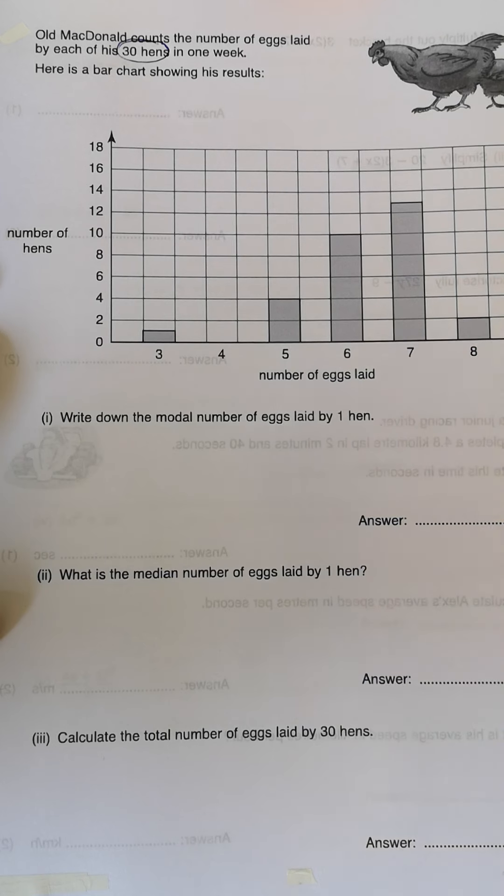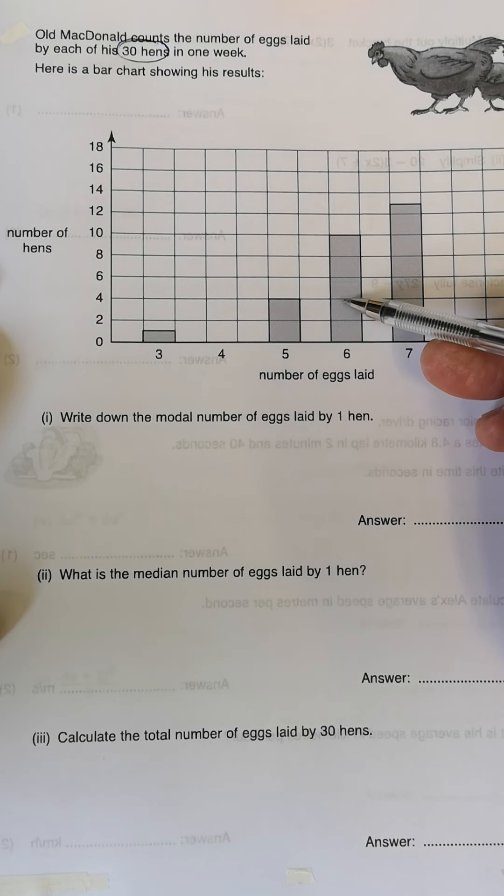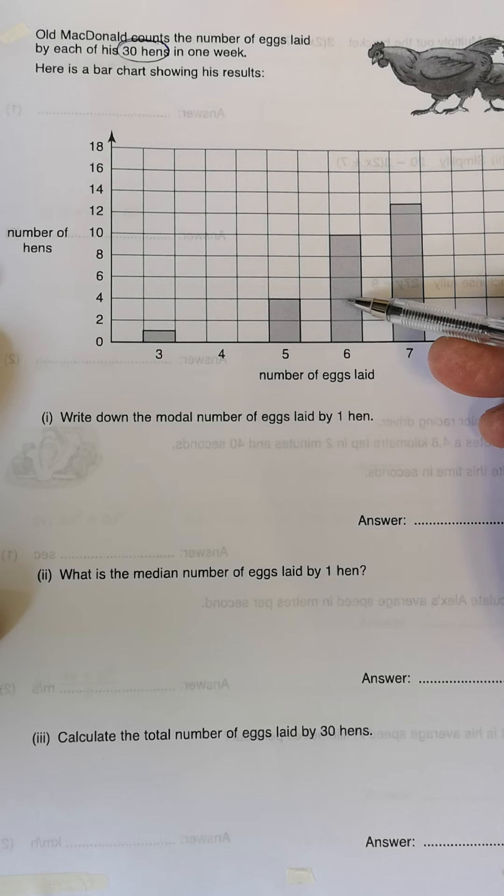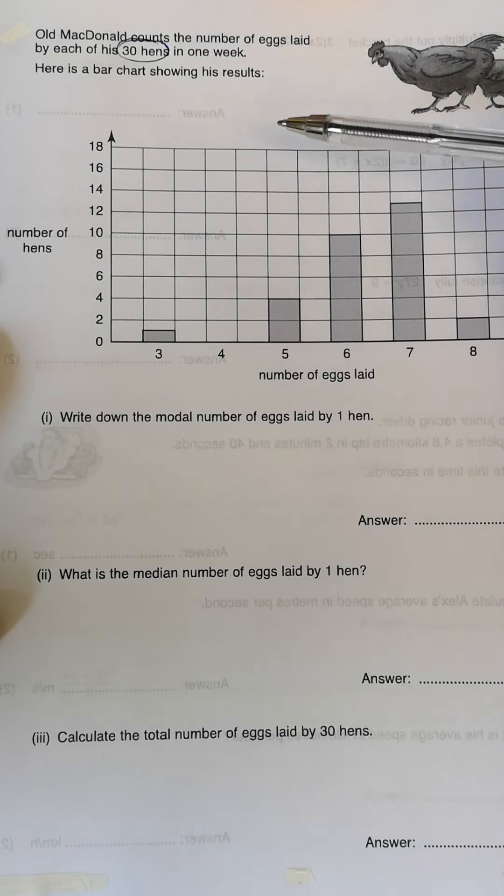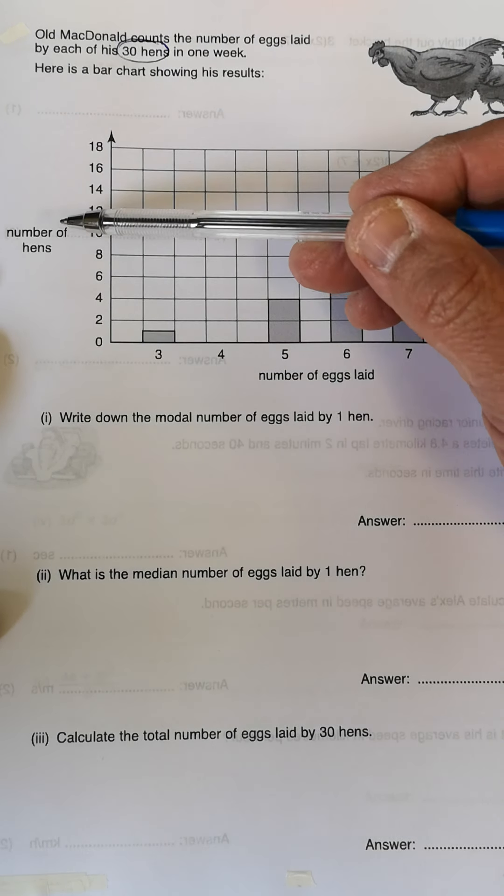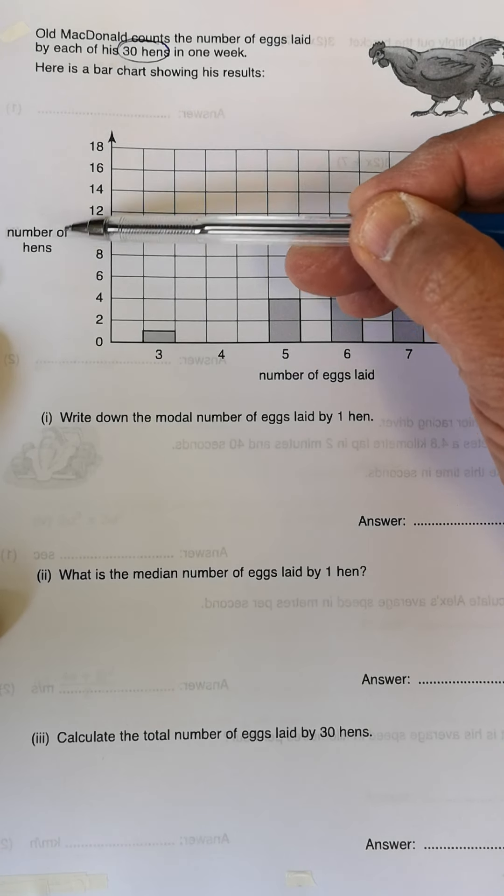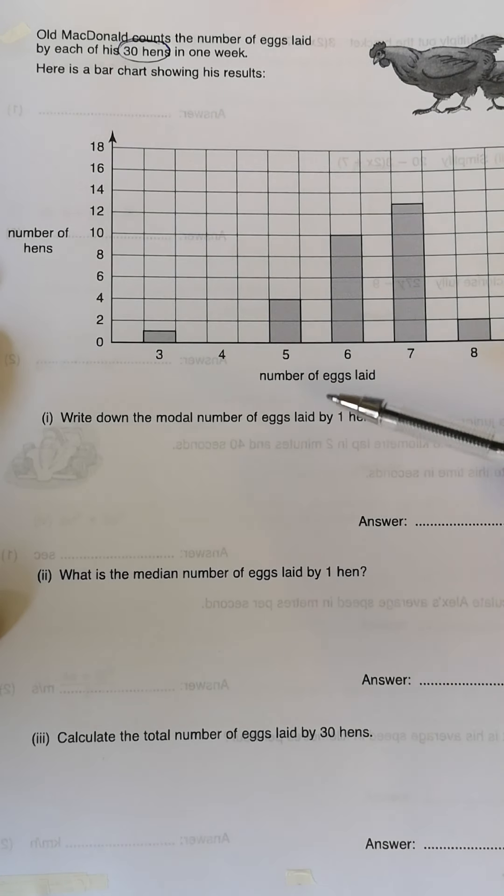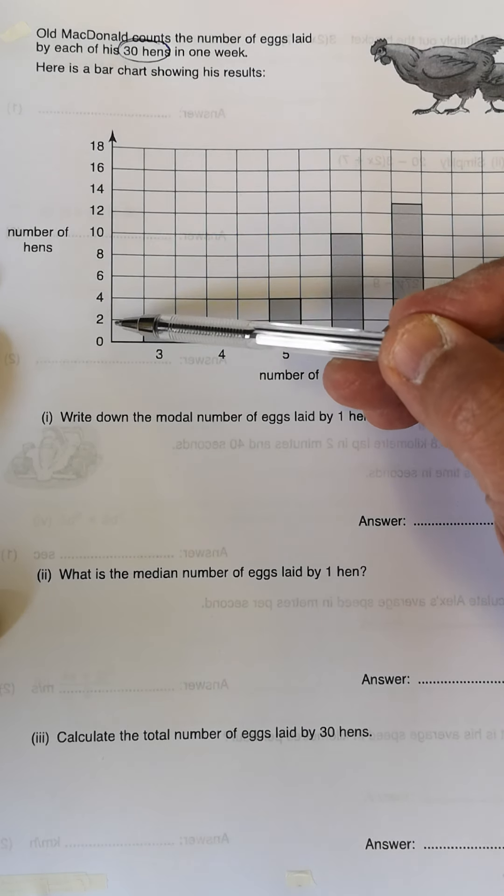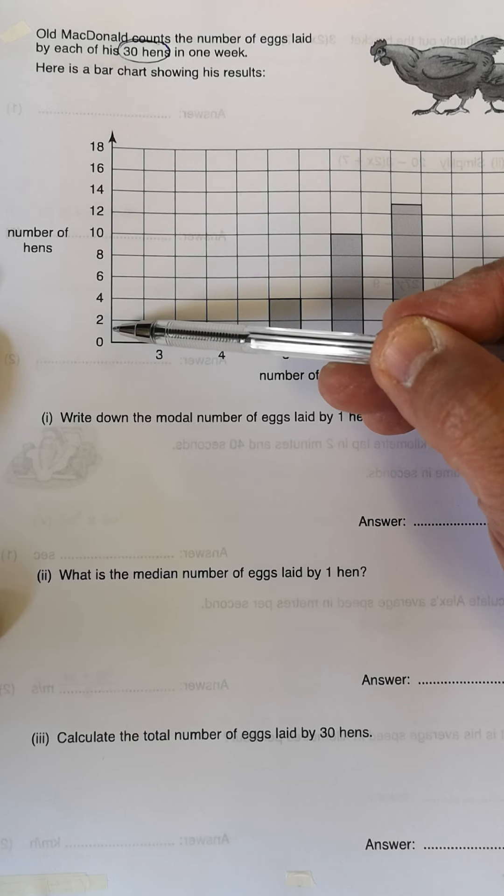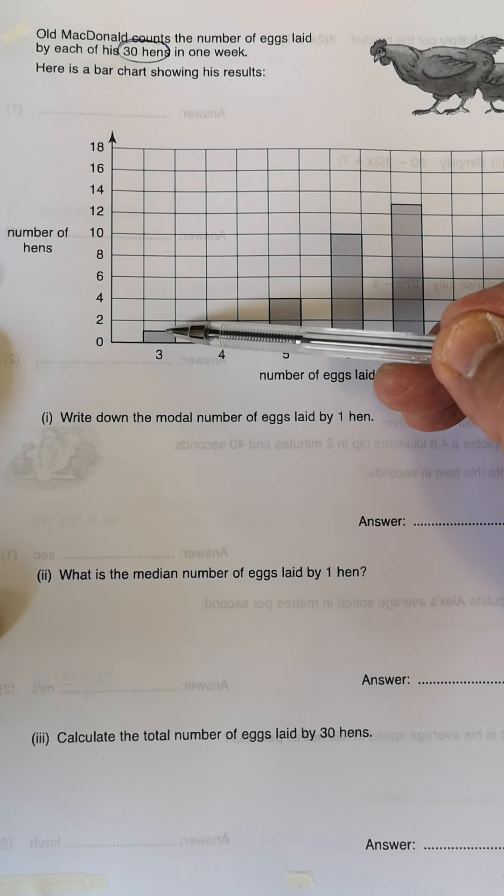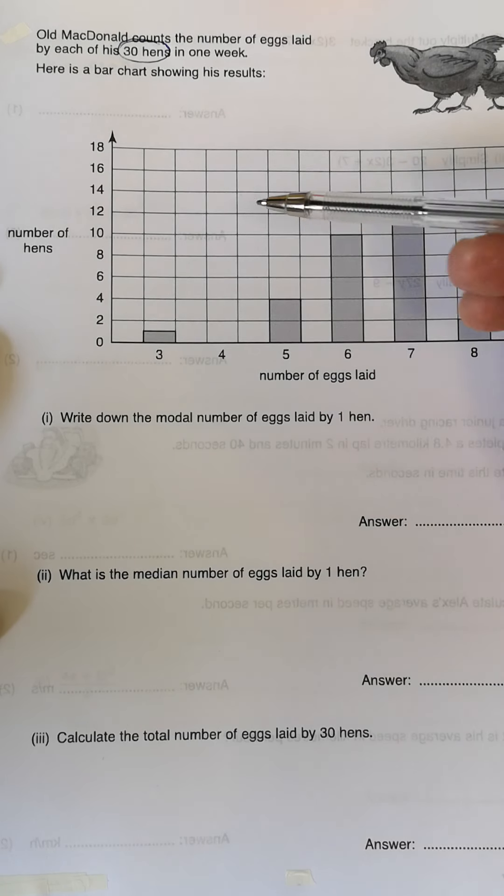Now here below is a bar chart showing his results. For instance, if we look at this bar chart, let's read it and see if we can read it properly. The y-axis tells us the number of hens and the x-axis the number of eggs laid.